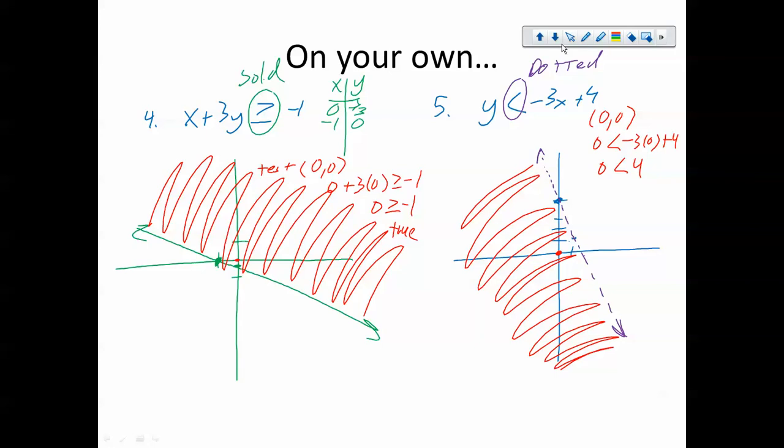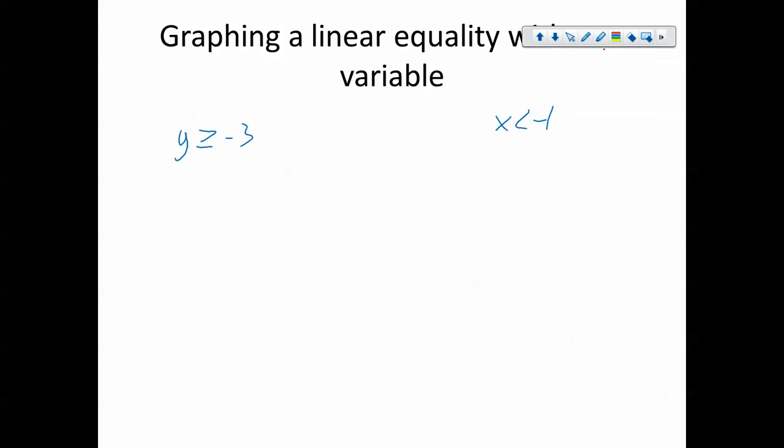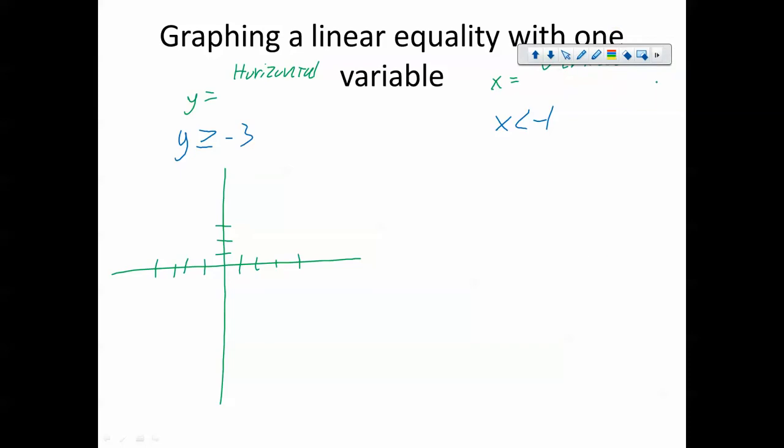Alright, let's do our last two examples. They're fairly quick here. Drawing horizontal and vertical lines. So we did these in the past. When it's y equals, it is a horizontal line. When it is x equals, it is a vertical line. Which means, since this is less than, still vertical line.